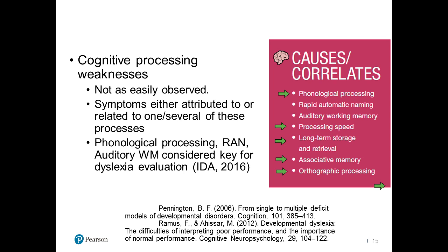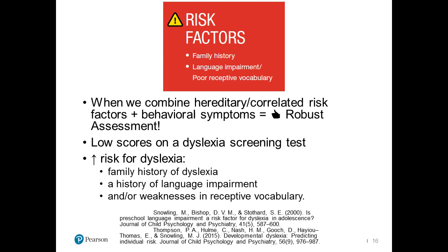When we break down risk factors, combining these hereditary or correlated risk factors with the behavioral symptoms and the causes and correlates is really what we consider a robust assessment. We have to take into consideration the risk factors when interpreting a child's reading difficulties to determine whether or not dyslexia is part of that.